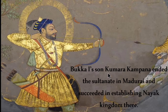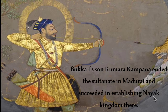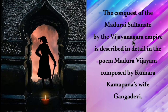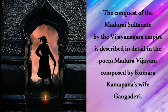Bukka's first son Kumara Kambana ended the sultanate in Madurai and succeeded in establishing the Nayak kingdom there. The conquest of the Madurai sultanate by the Vijayanagara empire is described in detail in the poem Madurai Vijayan, composed by Kumara Kambana's wife Ganga Devi.